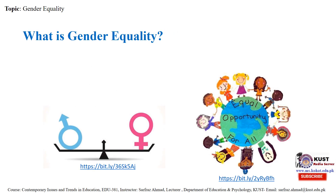What is meant by gender equality? UNICEF says gender equality means that women and men, and girls and boys enjoy the same rights, resources, opportunities and protections. It does not require that girls and boys or women and men be the same or be trained exactly alike. Gender equality is intrinsically linked to sustainable development and is vital to the realization of human rights for all.